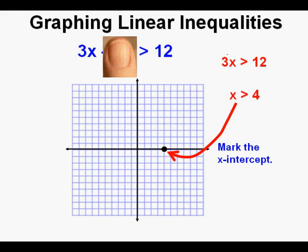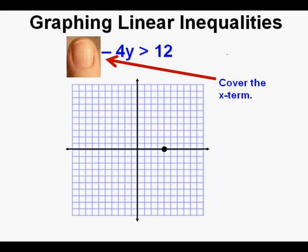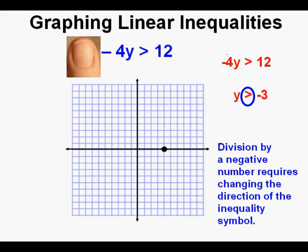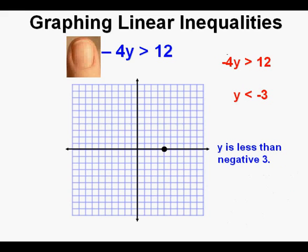We solve for the y intercept by covering up the x term. What's left is negative 4y is greater than 12. But wait — when we solve an inequality by dividing by a negative number, we need to change the direction of the inequality symbol. So it will be y is less than negative 3. Now we draw in a point at the y intercept of negative 3.